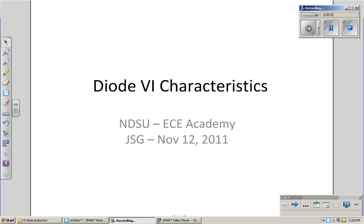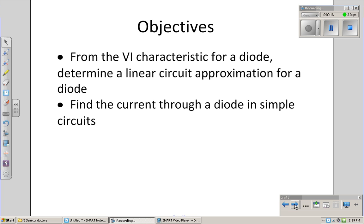In our last slide, we saw that with silicon I can create p-type and n-type material. When I put the two together, I get a p-n junction called a diode. Here I'd like to look at what the voltage-current characteristics are for a diode. The objective is, from the VI characteristics, to determine a linear circuit model that allows us to analyze circuits containing diodes and find the current through a diode in a simple circuit.